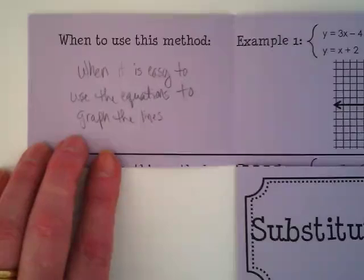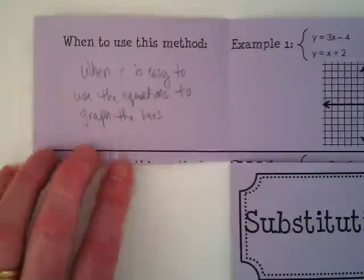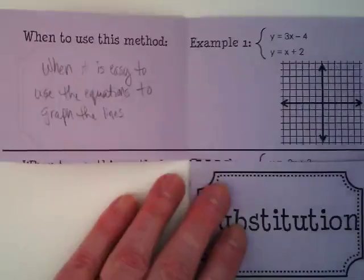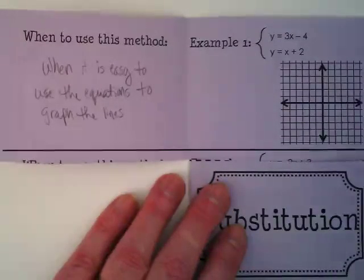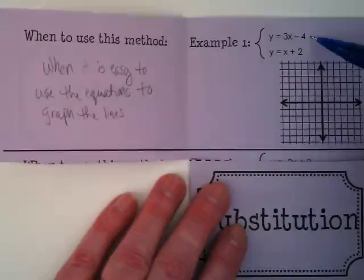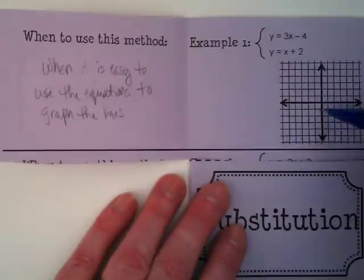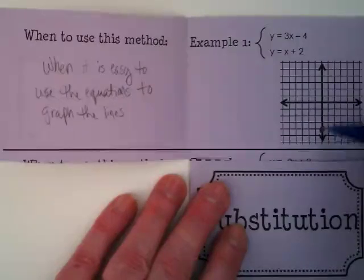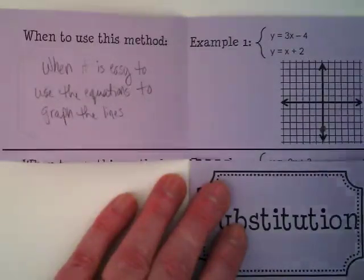So it's best used when the equations really are easy. When I look at the two equations in this example, they're both already in y equals mx plus b form. The first one, we have negative four as our y-intercept and its slope is positive three over one.